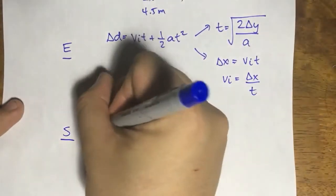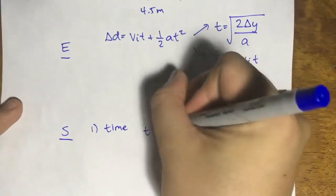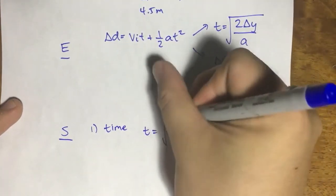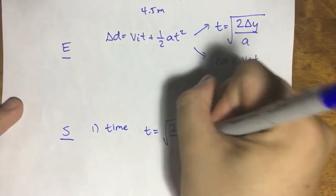Let's do the first bit: Time. So in order to get time, it's simply t is equal to square root of 2 delta y over a.